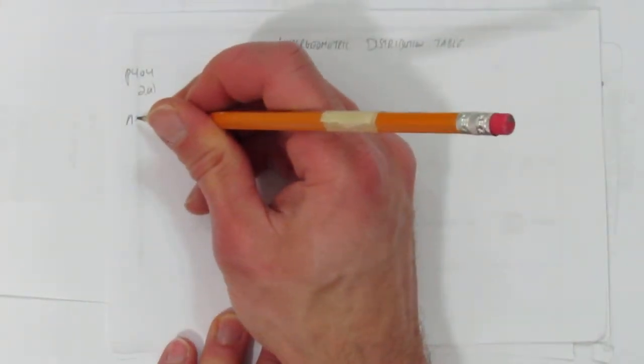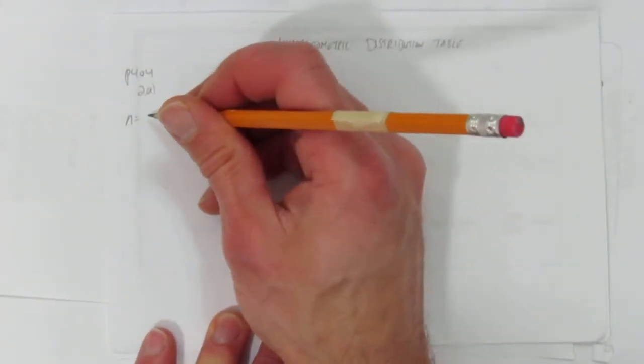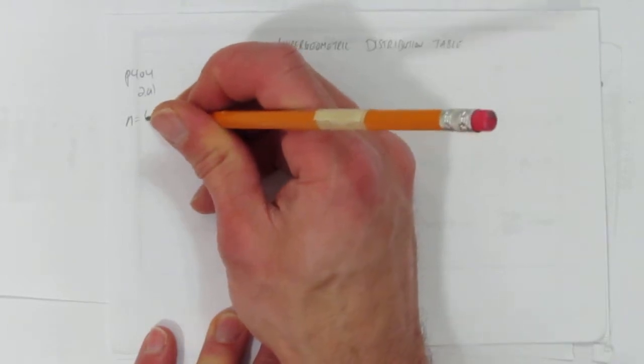This video will cover how to do a hypergeometric distribution table. The question comes from page 404 question 2a in your textbook, which says suppose there's a hypergeometric distribution table we want to make.